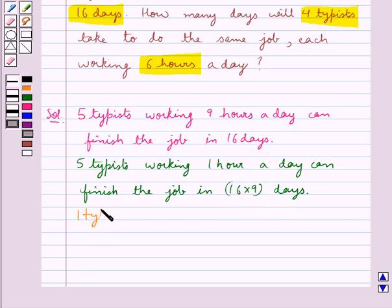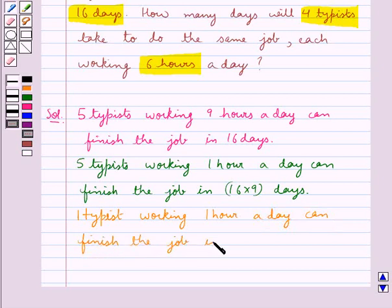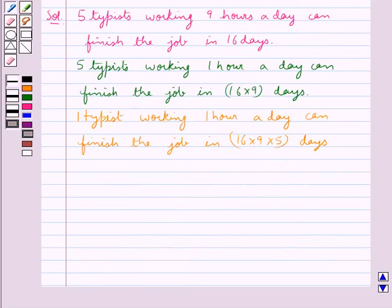Then 1 typist working 1 hour a day can finish the job in 16 into 9 into 5 days. Less the number of typists, more would be the number of days to complete the same job.